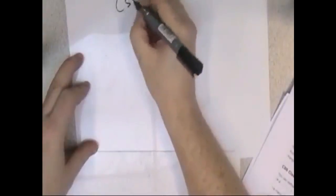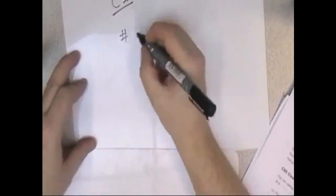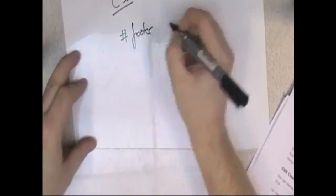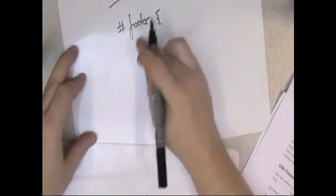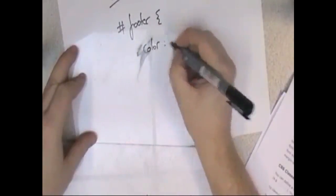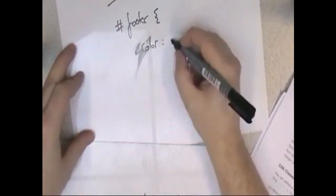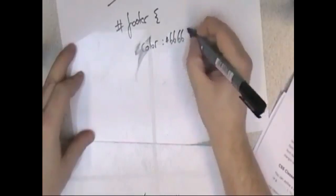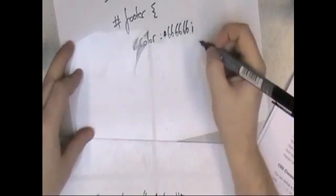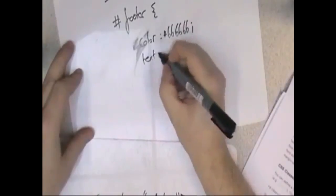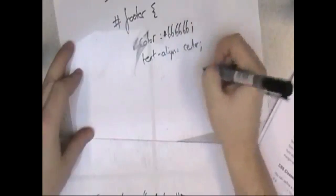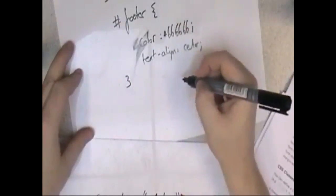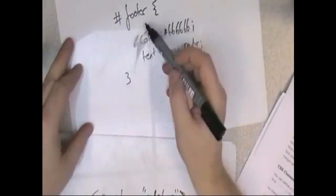There is also the ID. In CSS, an ID uses a hash symbol — so you'd write hash-footer to define a footer ID. The footer might be a lighter gray, like #666666, and center-aligned. The hash works just like a class, but with an ID.